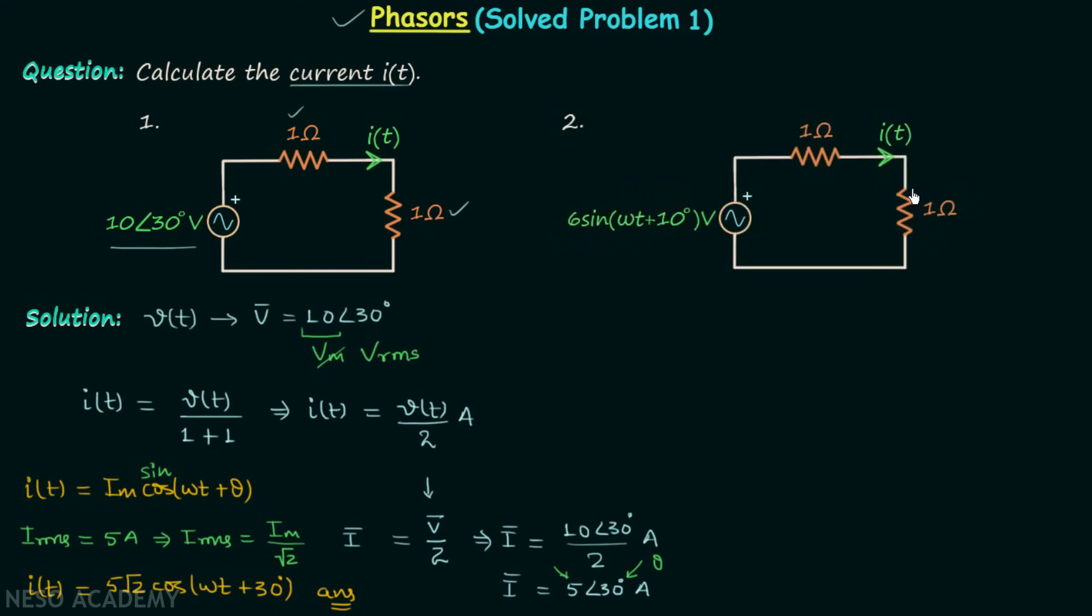Now let us move on to our second circuit. Everything here is same except we have voltage in sinusoidal form. So here the parent voltage is given - it is 6 sin omega t plus 10 degrees. We will have the phasor representation with the peak value. In phasor representation we include the amplitude and the phase. So we will have 6 angle 10 degrees in the phasor representation of Vt.